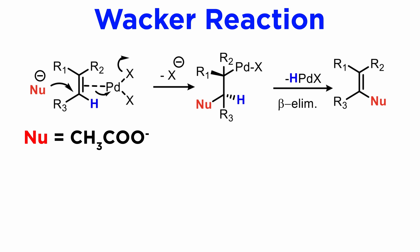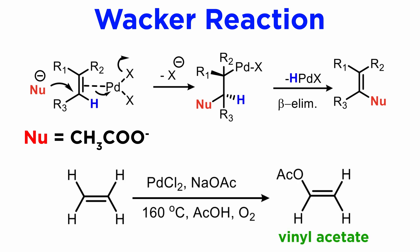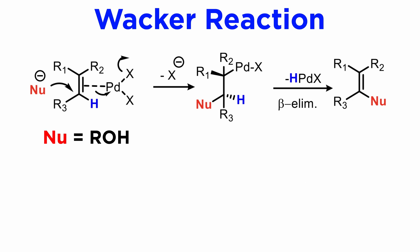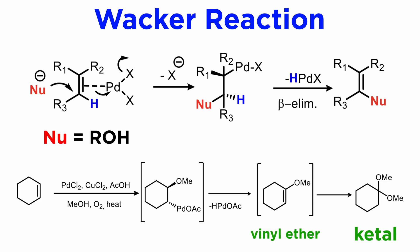In the classical Wacker case, the nucleophile is water. It is reasonable to assume that other nucleophiles can work as well, thus broadening the potential of this chemistry to other interesting transformations. For example, a carboxylate can be the nucleophile, and this reaction is an important approach to vinyl acetate, a valuable monomer for many commercial polymerization reactions. Alcohols can also function as nucleophiles, and under the acidic conditions used, ketals are usually formed from the intermediate vinyl ethers.